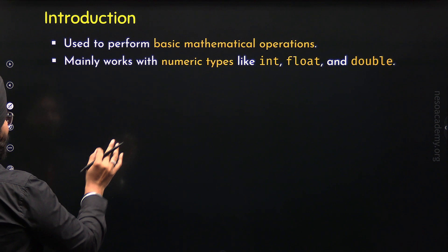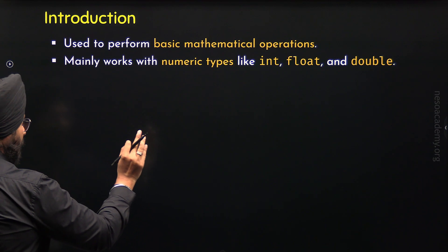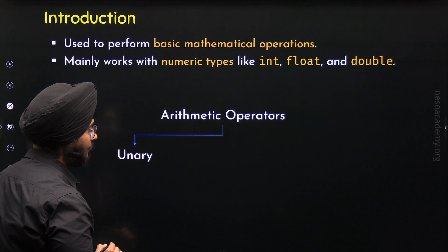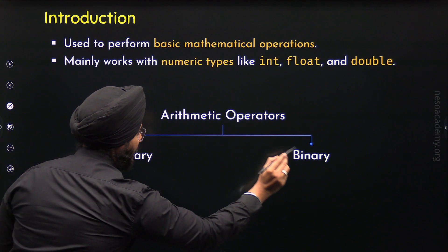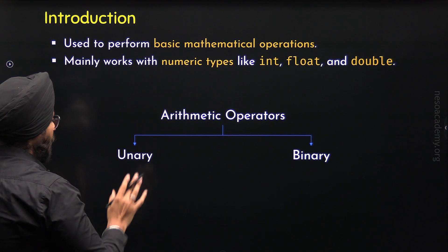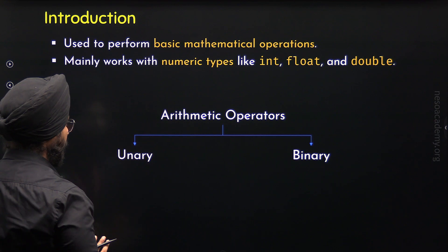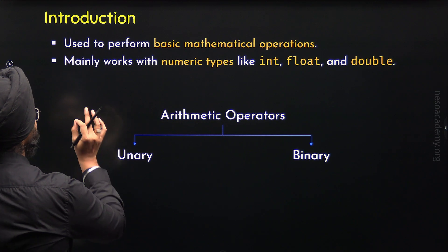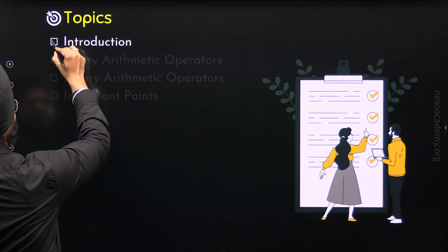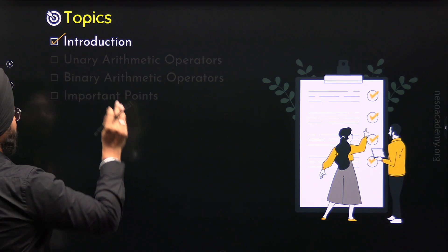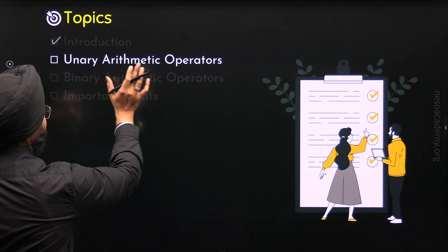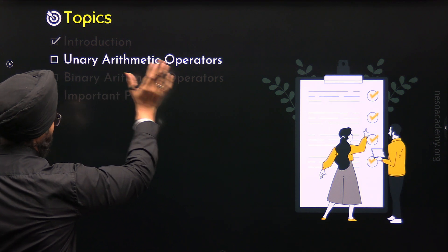Now, I would like to mention that there are two types of arithmetic operators. We have unary arithmetic operators and we have binary arithmetic operators. We will discuss these two operators properly. We are done with the Introduction to Arithmetic Operators. Let's move to the second topic and understand unary arithmetic operators properly.